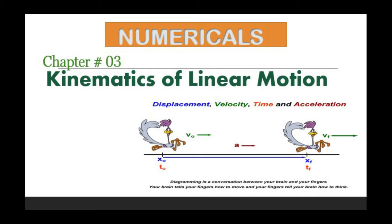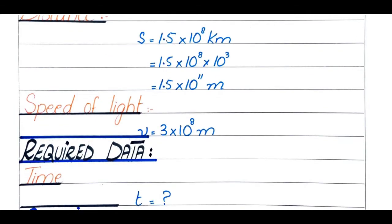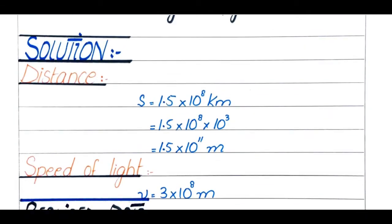Problem number 3.1: Find the time taken by sunlight to reach the ground if the distance between the sun and the earth is 1.5 × 10⁸ kilometers and velocity of light is 3 × 10⁸ meter per second. Given data: distance is 1.5 × 10⁸ km, which we need to convert to meters by multiplying by 1000.